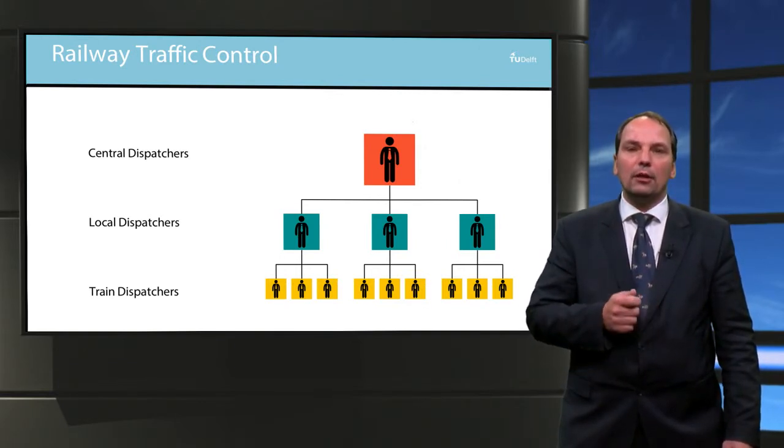Railway traffic control generally consists of train dispatchers, local dispatchers and central dispatchers, which all work on a different level within railway traffic control.